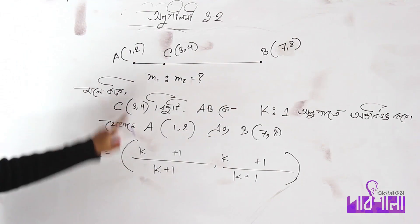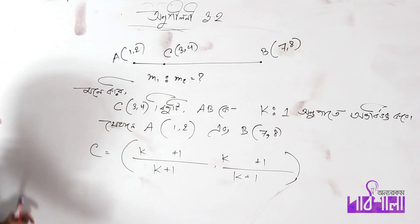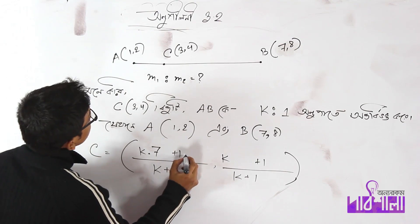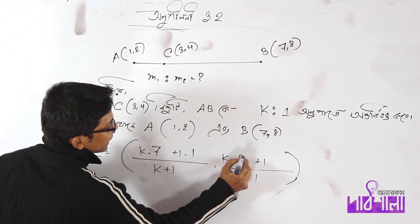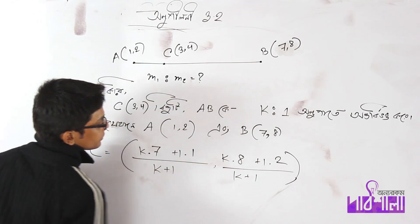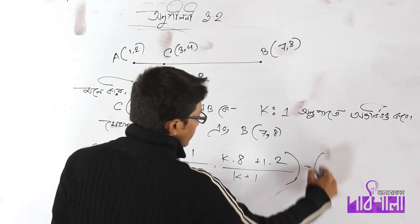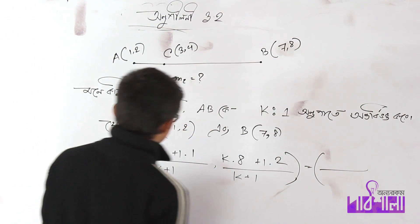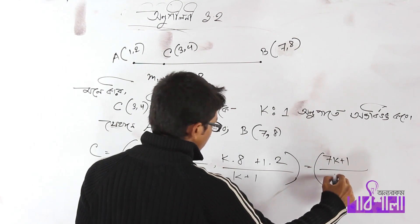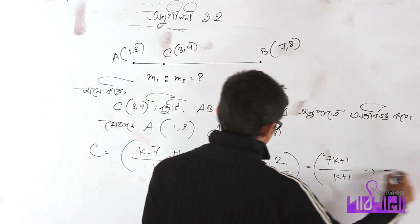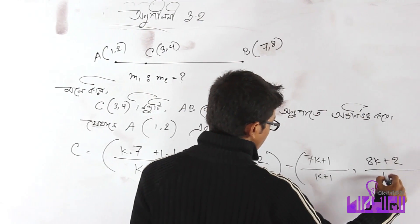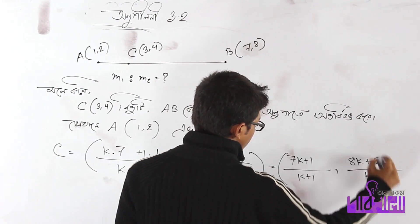Now we will write K is to get a plus 7. 1 is to get a plus one, 2. So how do we get this? This is 7k, k plus 1. Where? 8k plus 2, k plus 1.